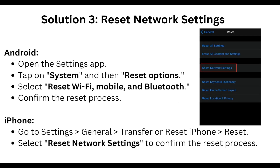To reset network settings on Android, open the Settings app, tap on System, then Reset. Select the option to reset Wi-Fi, mobile, and Bluetooth, and confirm the reset process.